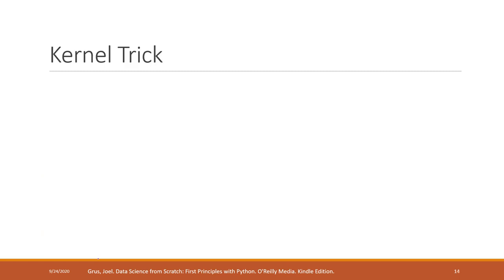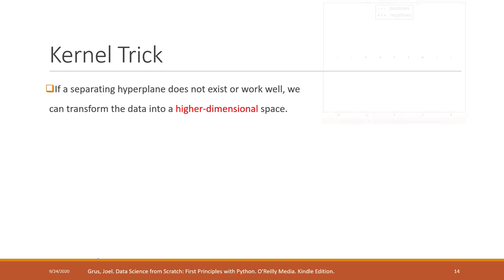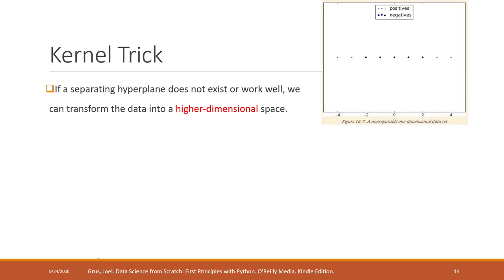One unique feature of SVM is called the kernel trick. In some cases, it is very hard to find the hyperplane or boundaries in lower dimensions. For example, here we have two types of data — some data is arranged like this, and other data is like this — and they are in one dimension, making it very hard to find that decision boundary.